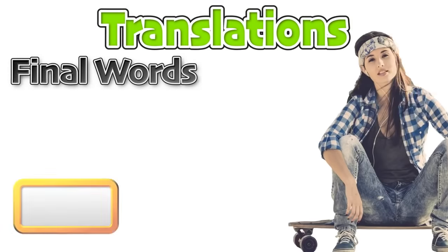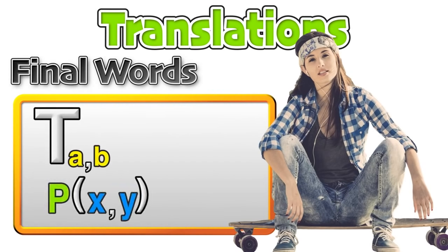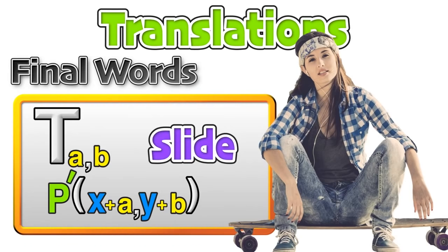Some quick final words on translation: a translation is when a point or image changes location without changing size or direction. We know that the notation for translation requires applying the a value to the x coordinate and the b value to the y coordinate.